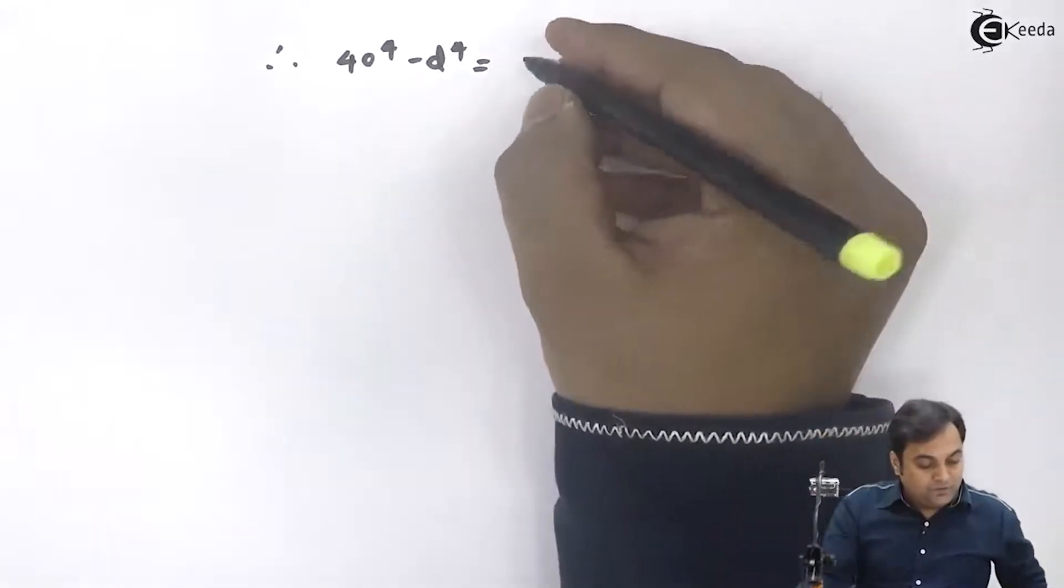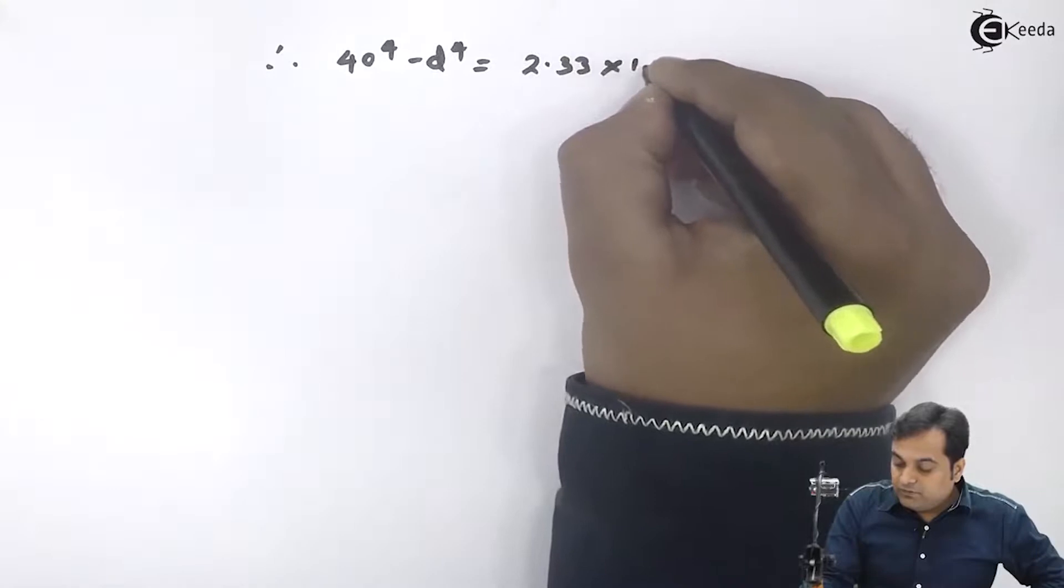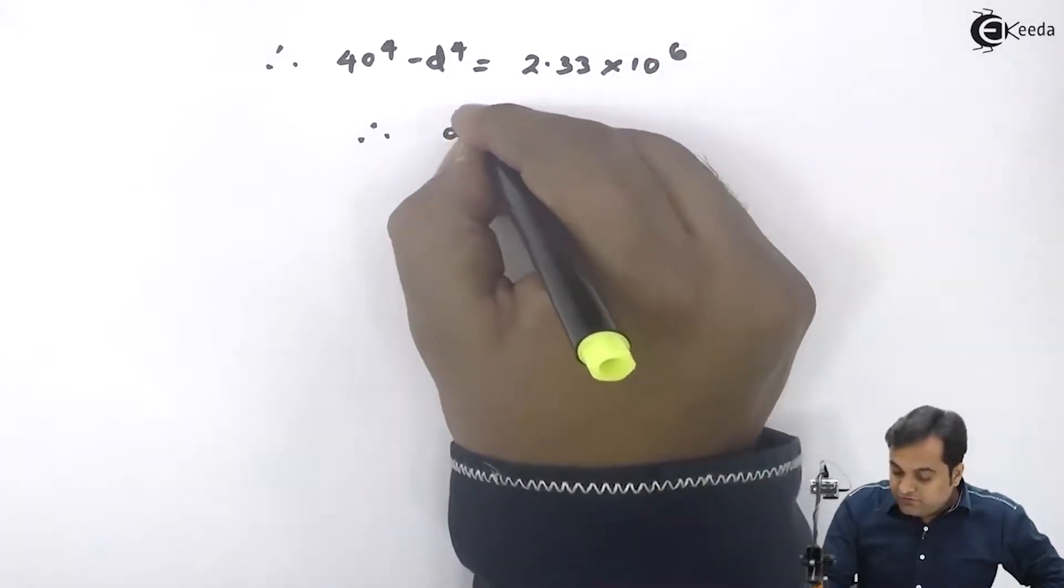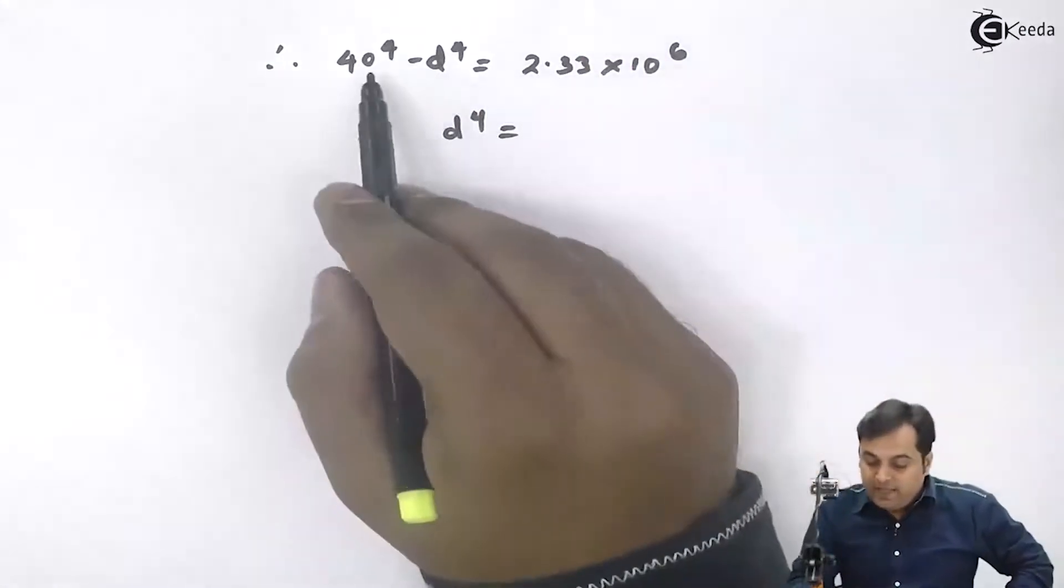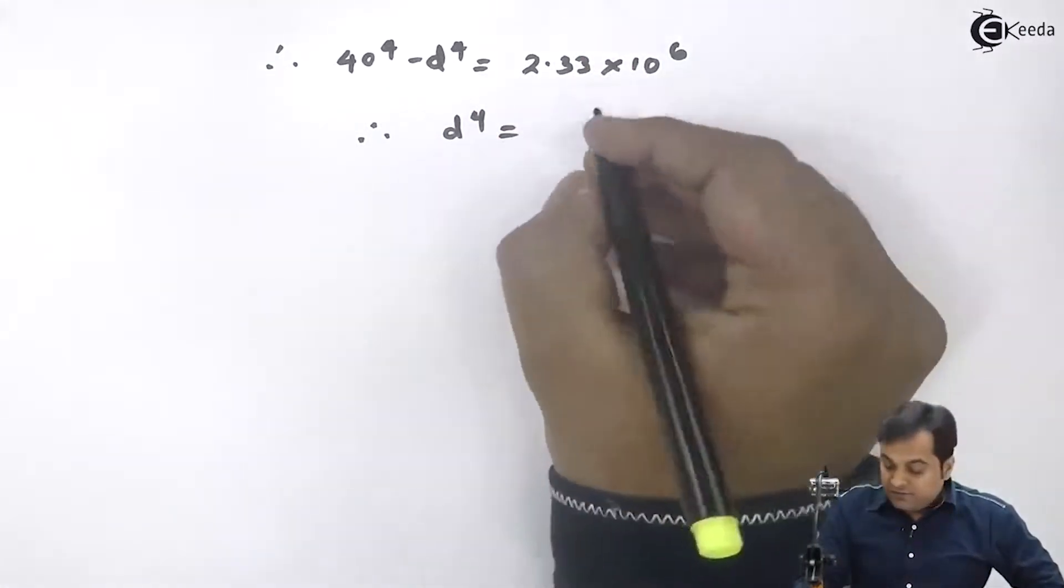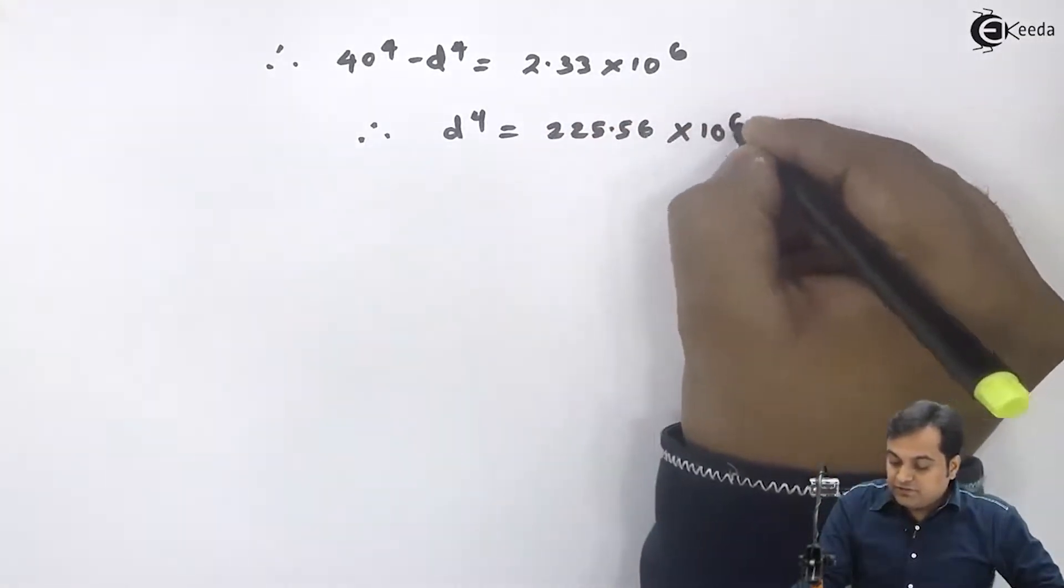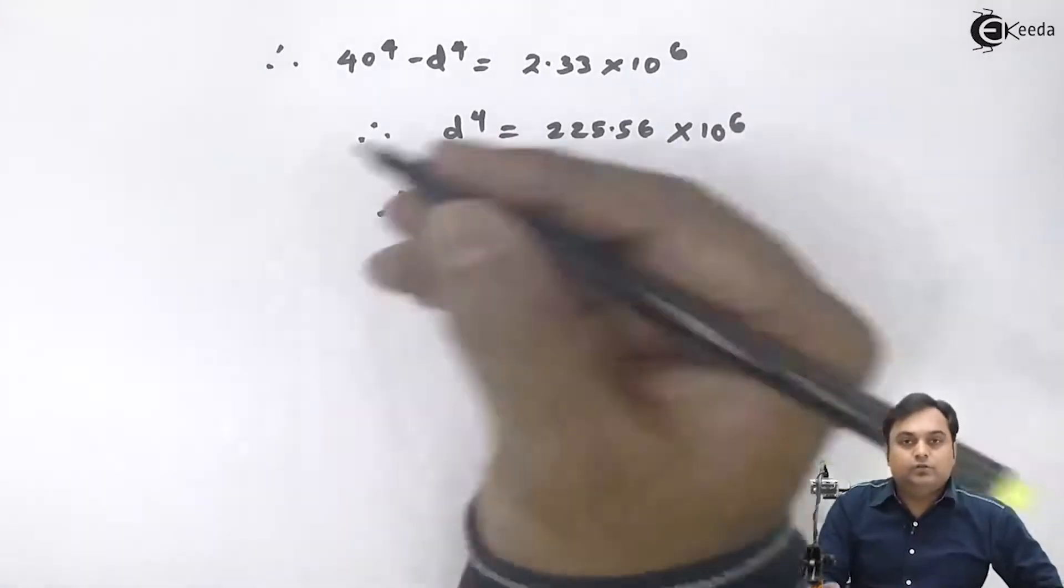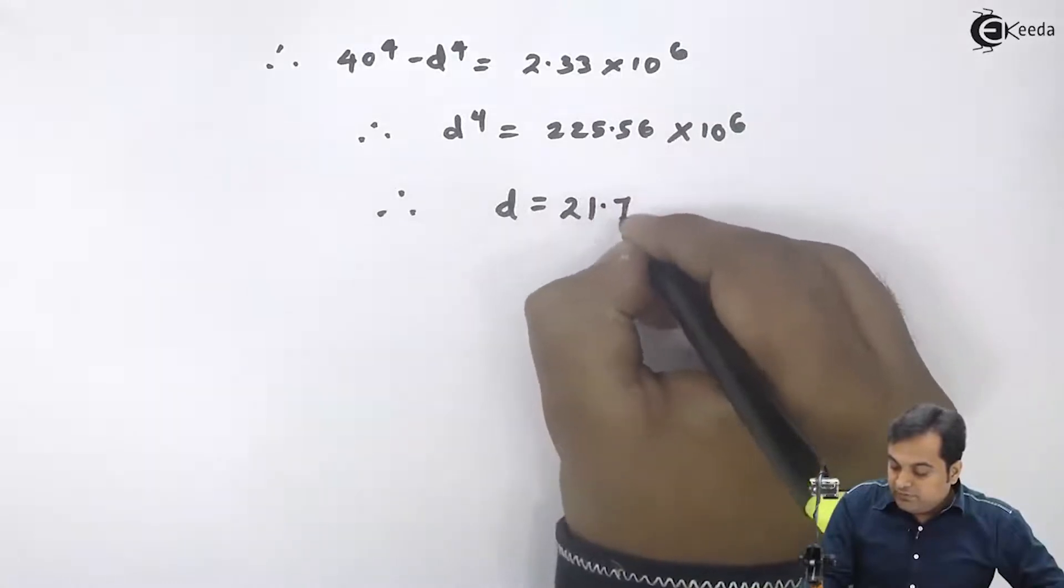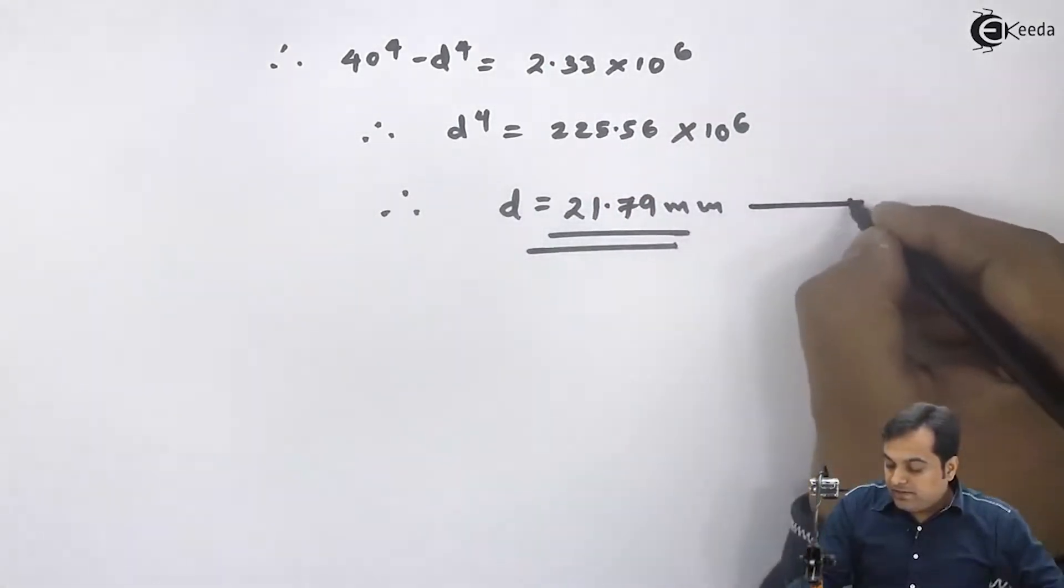This will be equal to 2.33 times 10 to the 6. So from this, small d to the 4 I will get as 40 to the 4 minus 2.33 times 10 to the 6. The value is 225.56 times 10 to the 6. So if I take the square root twice, I will get my answer of small d as 21.79 mm. This is my answer.